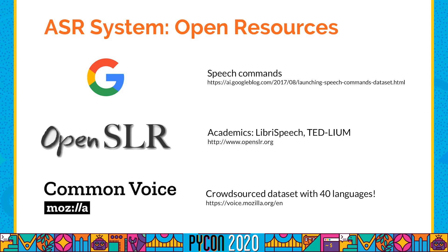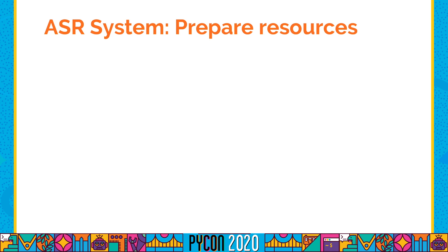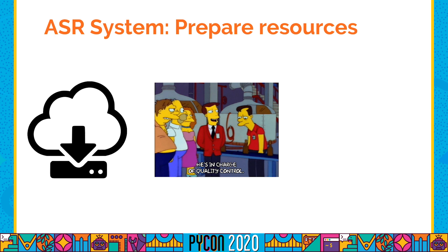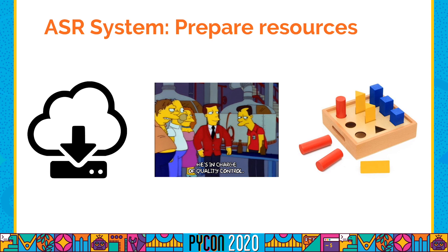If you want to explore more languages, you can check the Common Voice project from Mozilla, which provides up to 40 different languages. Now let me show you the steps to prepare resources for the modeling part: download them, perform quality control by checking audio quality and text format, and finally adapt the dataset to a format your toolkit can understand by performing some conversion or transformation of the original data.